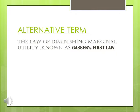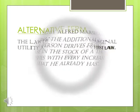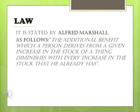The law of diminishing marginal utility is also known as Gossen's first law. It is stated by Alfred Marshall as follows: the additional benefit which a person derives from a given increase in the stock of a thing diminishes with every increase in the stock that he already has.